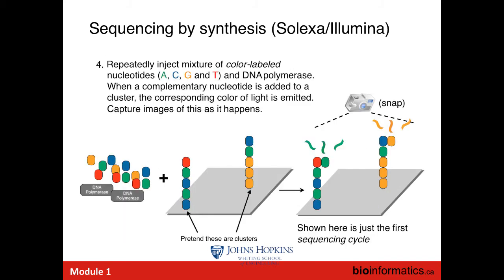Illumina sequencing is a cycle-based chemistry. They inject a mixture of color-labeled nucleotides — one unique color per nucleotide — add DNA polymerase, and it attaches the complementary base to each one of these templates. These are clusters, though we're drawing them as single templates here for clarity. A very expensive digital camera attached to a microscope then images the slide and detects which color of base was just incorporated into the growing strand — so for this cluster there's a green base, for this cluster there is a yellow base.